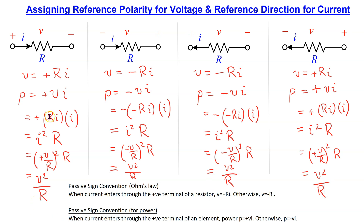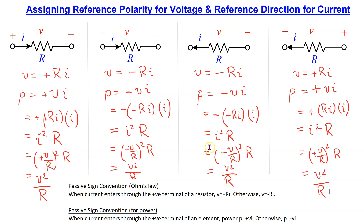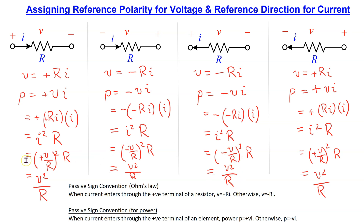Thus we can see that irrespective of the assigned reference polarity for voltage and the assigned reference direction for the current, the power is always a positive value — I squared R or V squared over R. Thus the power is always absorbed by a resistor. Please pause the video now if you wish to study this in more detail.